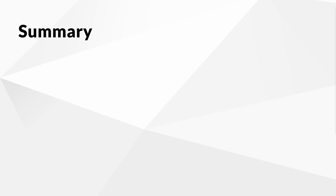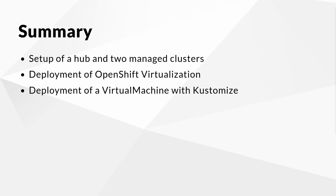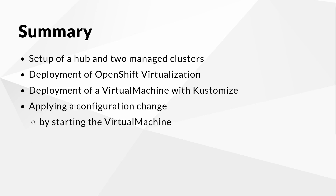Now that the demo is concluded, let me give you a quick summary of the things we did. In this demo, we set up a hub cluster and two clusters managed by ACM to deploy applications to from a centralized management point. As example applications, we deployed OpenShift Virtualization with simple manifests and a virtual machine with manifests customized by Kustomize. We learned how to apply customizations to specific environments and how we can start and stop virtual machines in a declarative way. All of this was accomplished in a GitOps way by using a Git repository as a single source of truth.